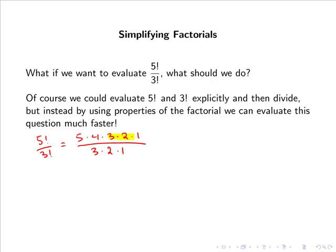As you can see, 3 by 2 by 1 will cancel with 3 by 2 by 1, and we are simply left with 5 multiplied by 4, or simply 20. Alternatively, we could have expressed 5 factorial as 5 multiplied by 4 multiplied by 3 factorial, and hence the 3 factorials would cancel with each other and we would immediately obtain the answer of 20.